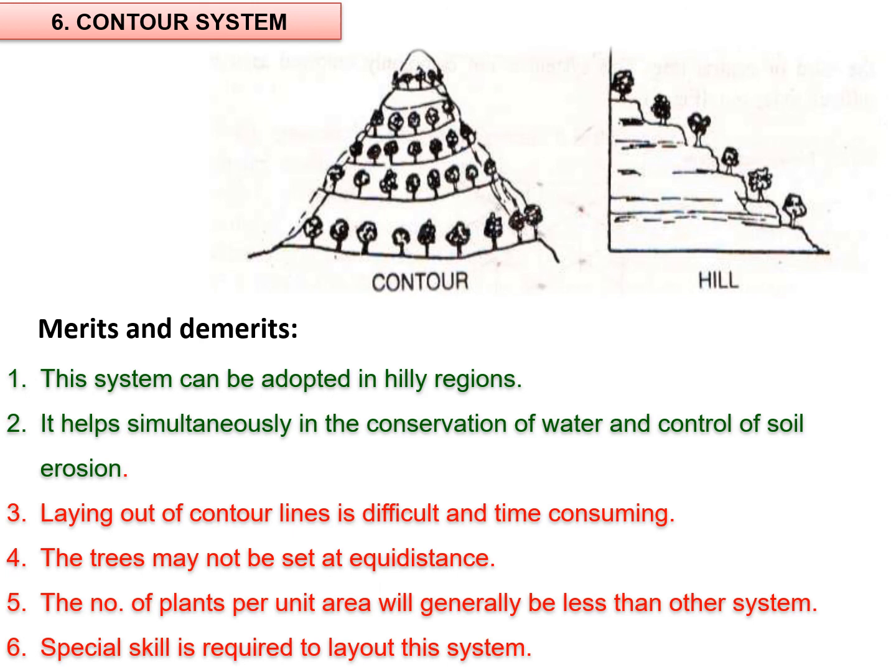This concludes the discussion on the different types of planting systems which we can use for fruit crop cultivation.